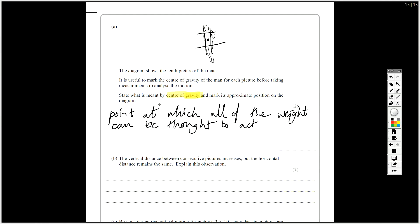So this next one is asking you really just to discuss what we do with projectile motion. This is quite a simple question really, but you've got to kind of recognise that. The vertical distance between the consecutive pictures increases, but the horizontal distance remains the same. Explain this observation. So there's two marks meaning firstly explain why the vertical distance increases, and the second why the horizontal stays the same.